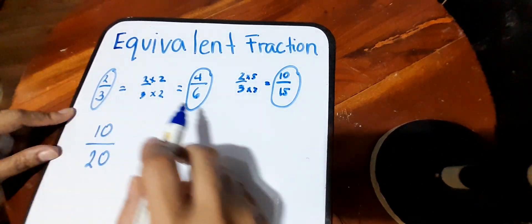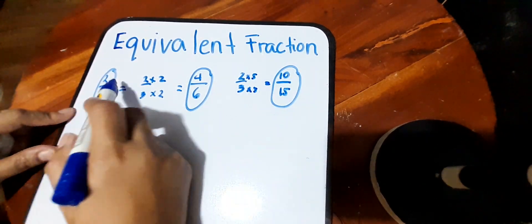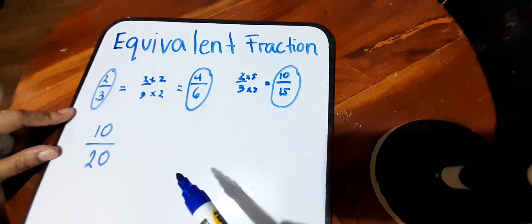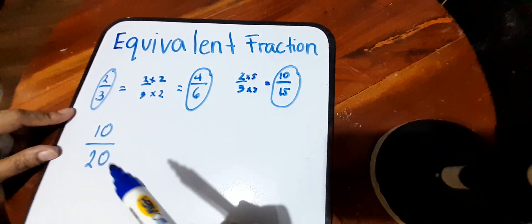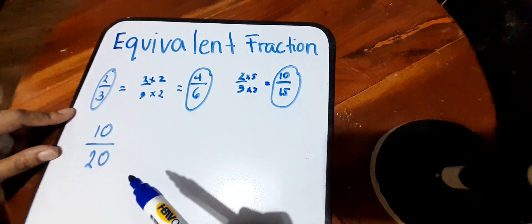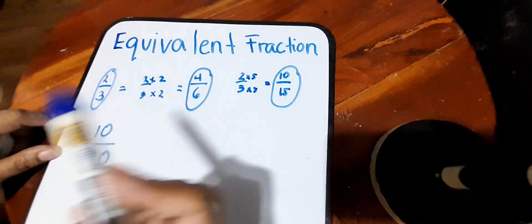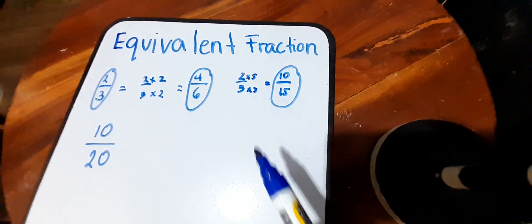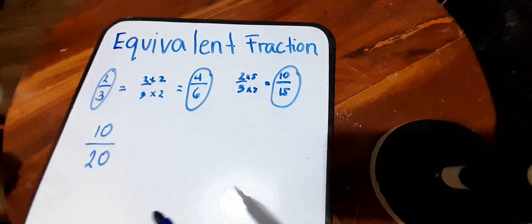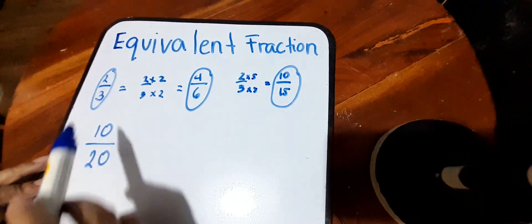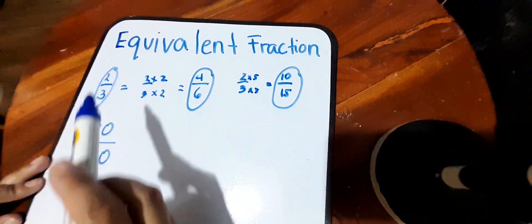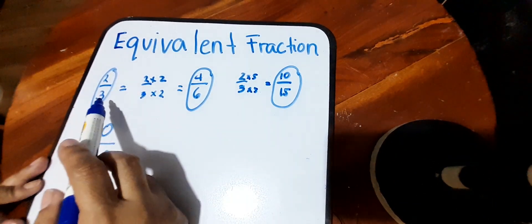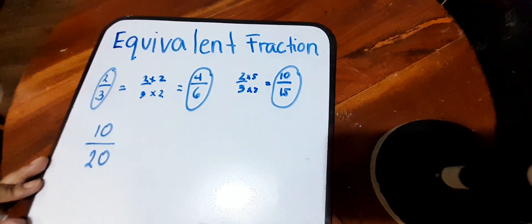You can multiply two-thirds by any number — it can be two, three, four, five, anything. As long as when you multiply the numerator, it should also be the same number multiplied to the denominator.